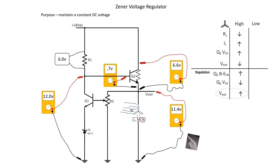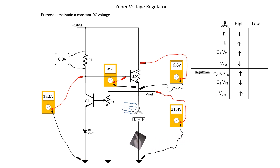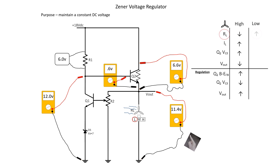Let's kick this thing into low speed — let's increase the resistance of RL. Look what happens to current flow when we increase the resistance of RL. Look at those little electrons go — there's so much less than what we had on high speed. With less current flowing through Q2, its voltage drop emitter to collector is going to decrease and force our Vout to go back up.